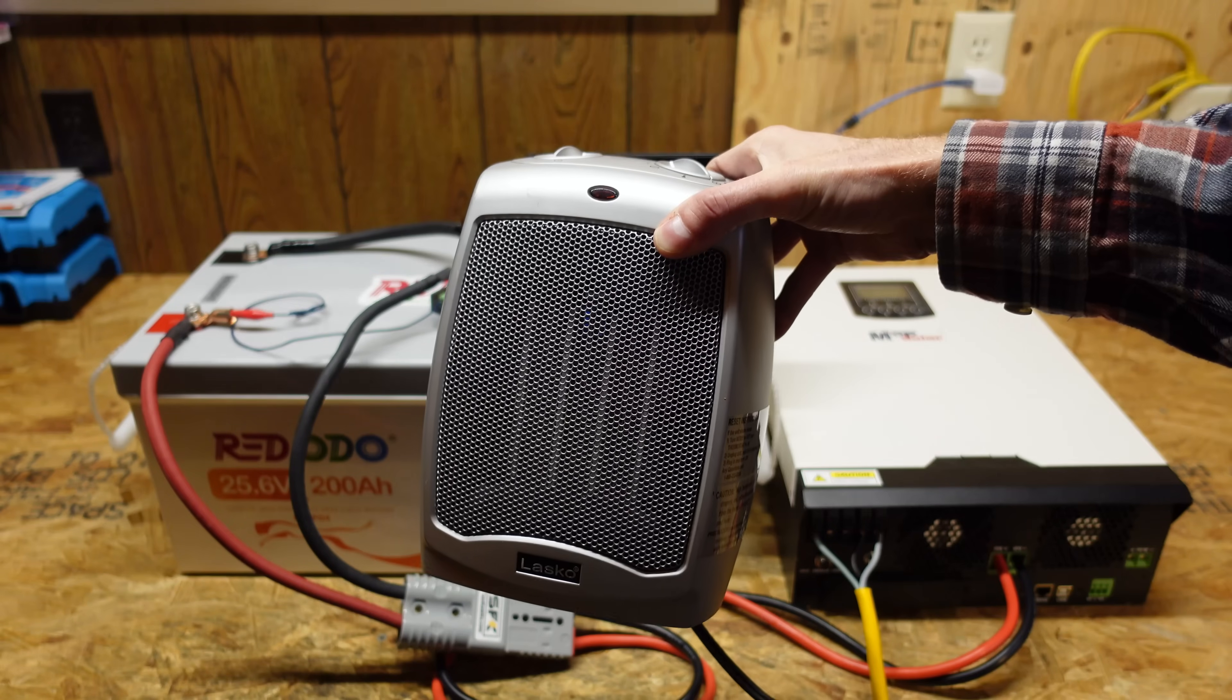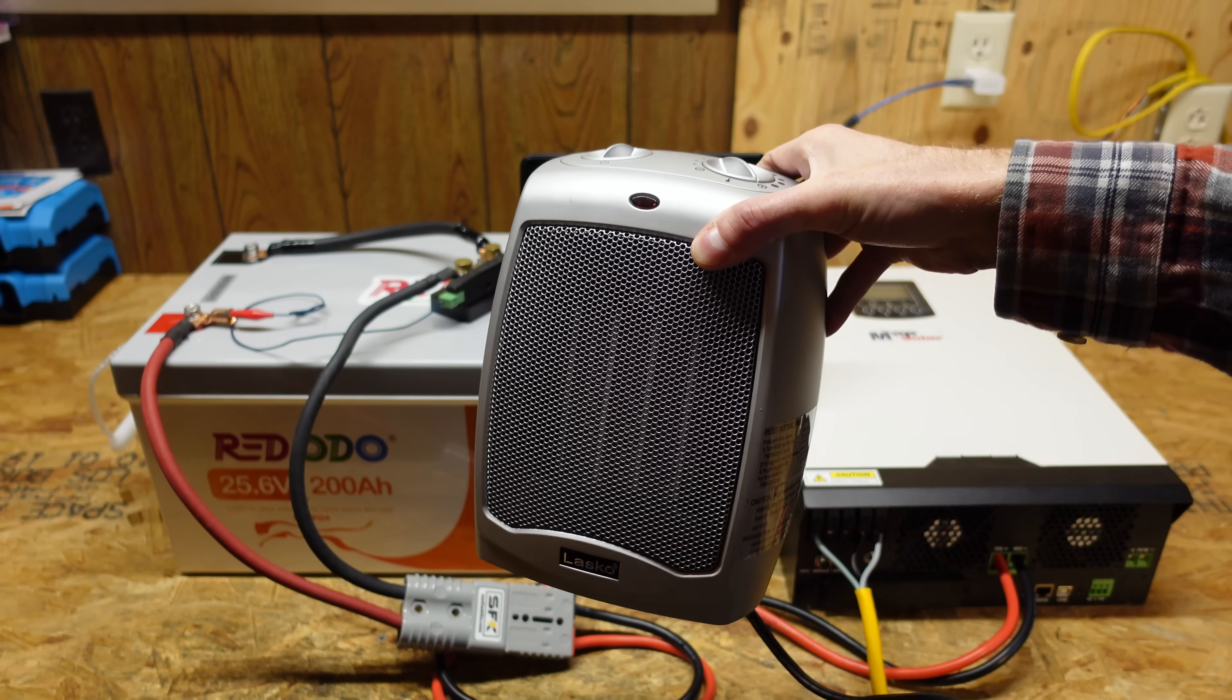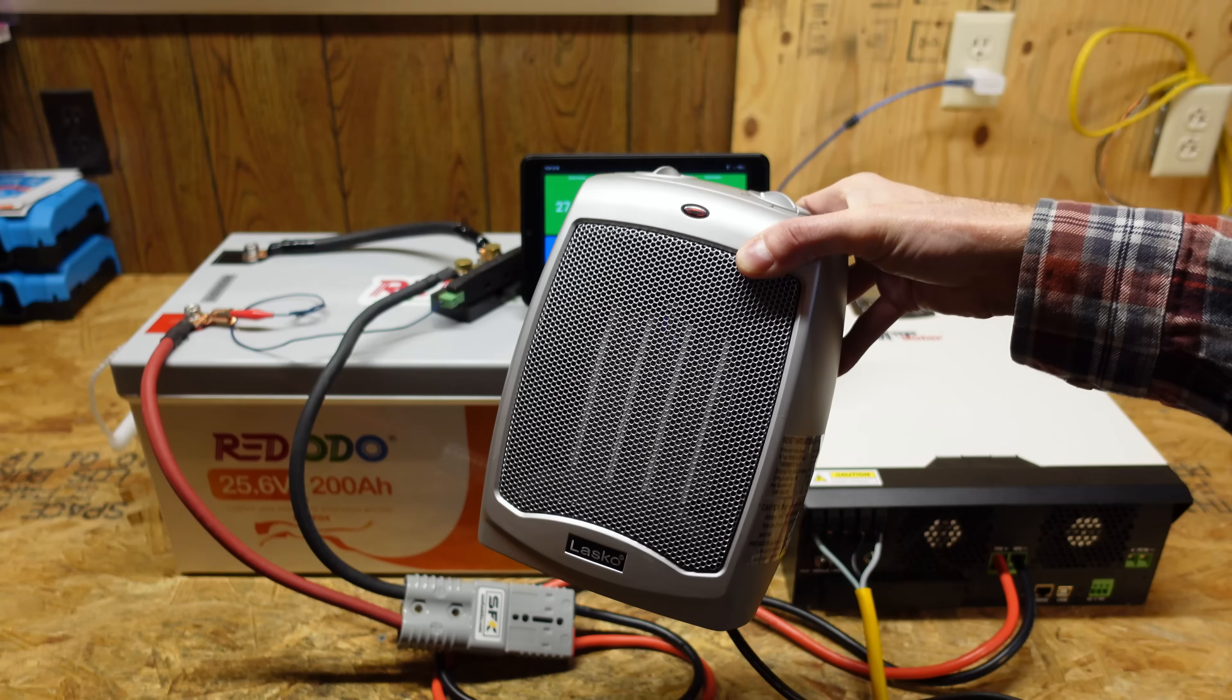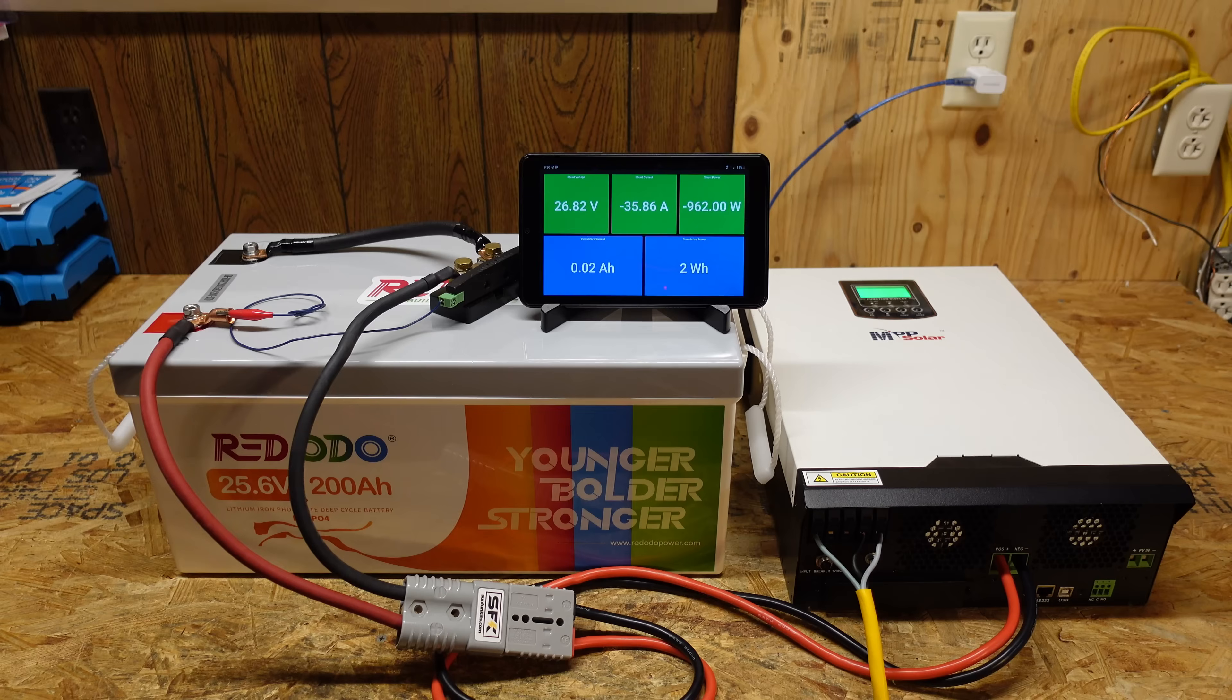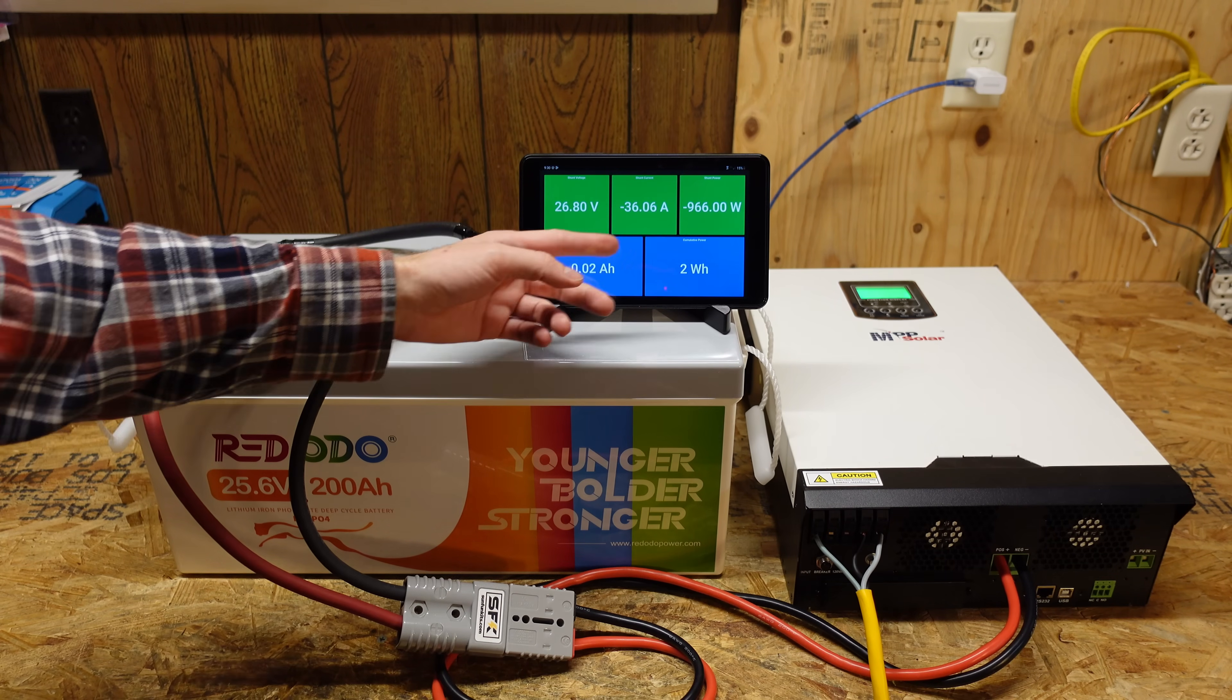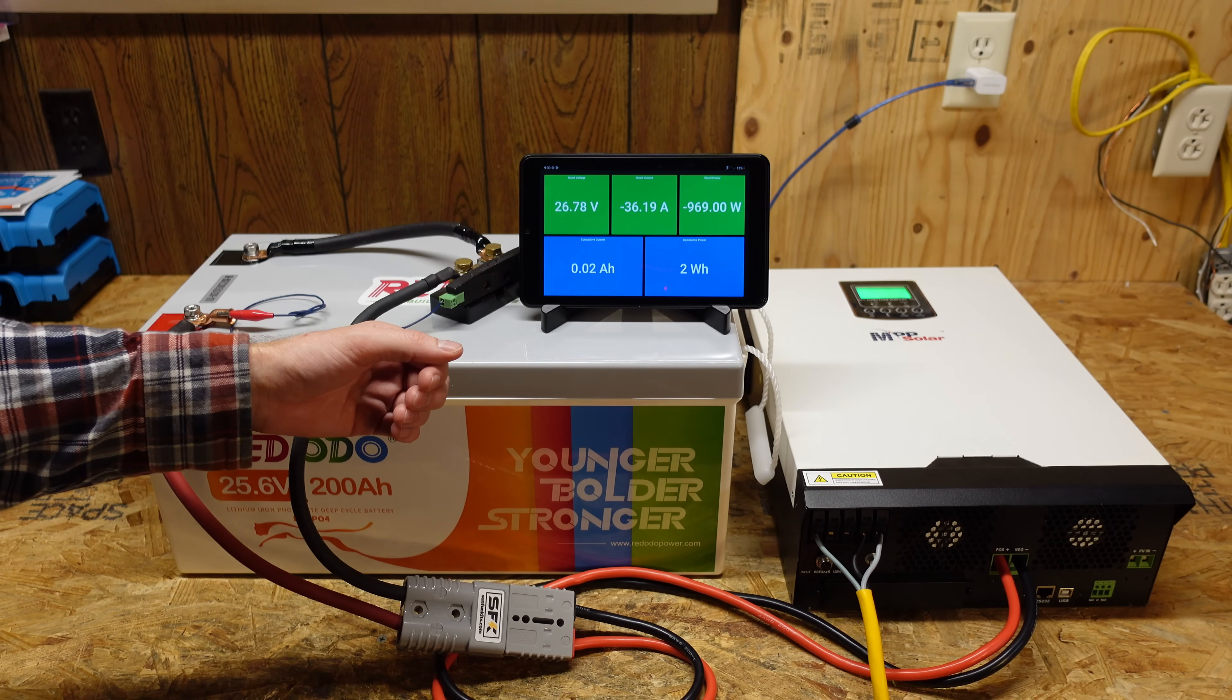So I'm going to use this standard space heater I've used in other tests, and running this on low should put about 970 watts on the battery, which is pretty close to a 0.2C rate. And we are discharging at approximately 965 watts. You see it's still climbing a little bit as that element warms up.